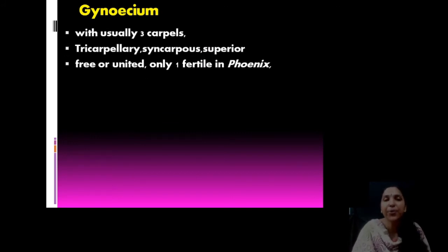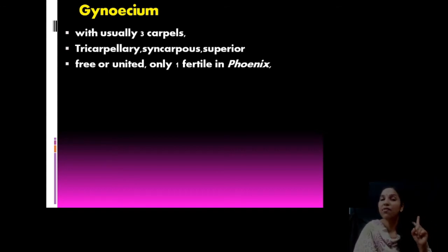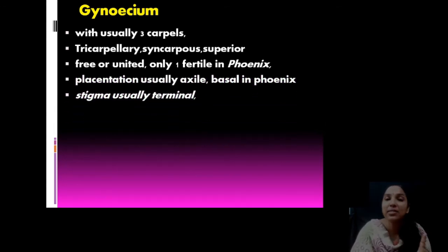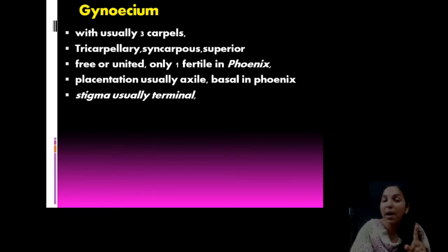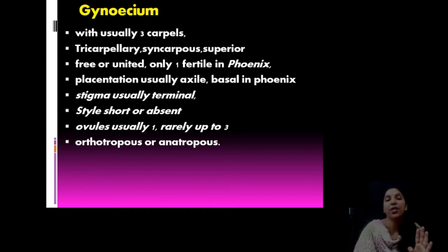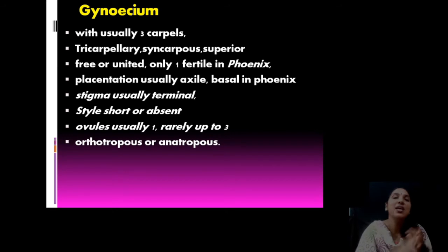Looking into the gynoecium — it has 3 carpels, that is tricarpellary, superior, and syncarpous. Hypogynous flower means ovary is superior and syncarpous tricarpellary. Free or united. In Phoenix, only one carpel is fertile and all others are sterile. Placentation is axile; basal placentation is also present in some cases — example, date palm. All others have axile placentation. Stigma is terminal and style is very short or absent.